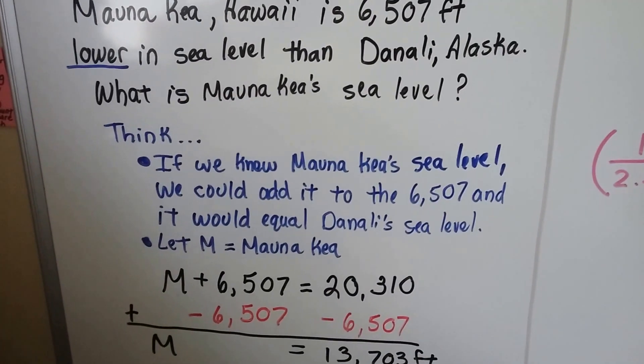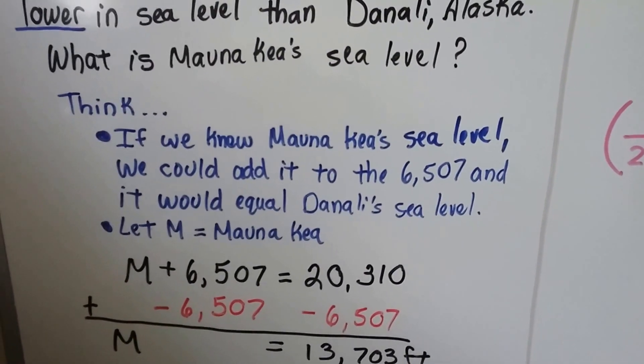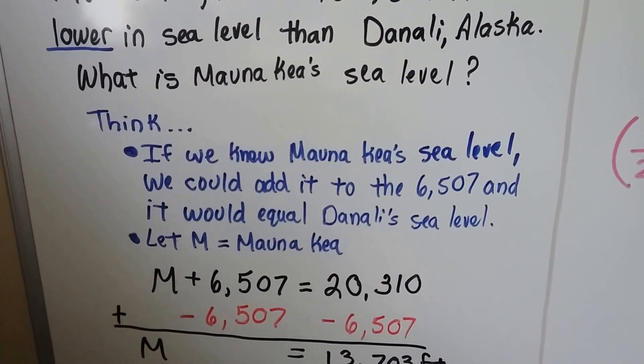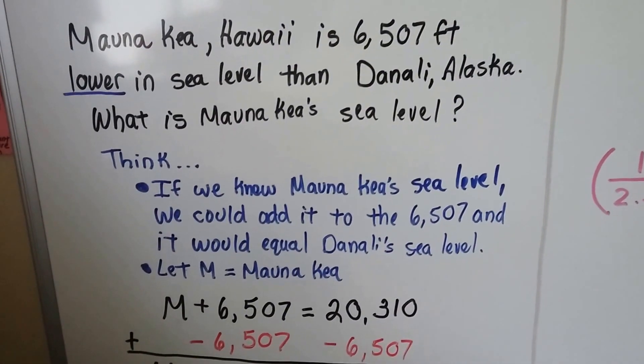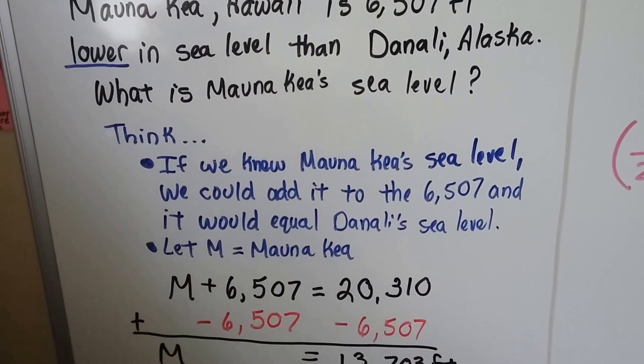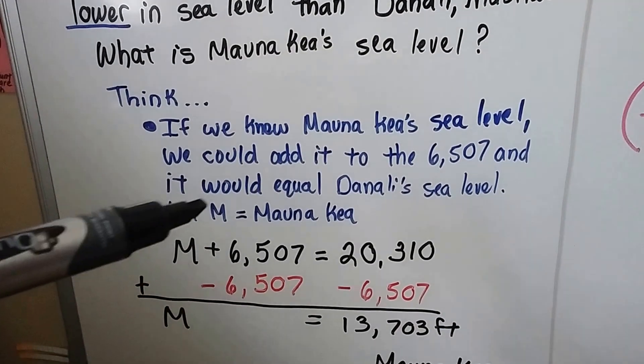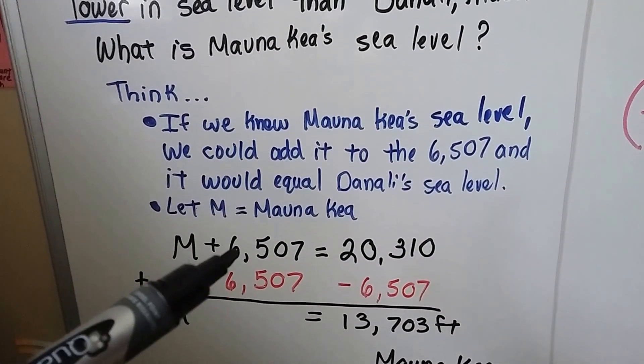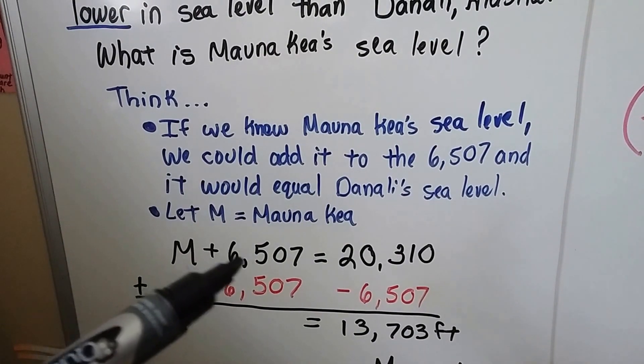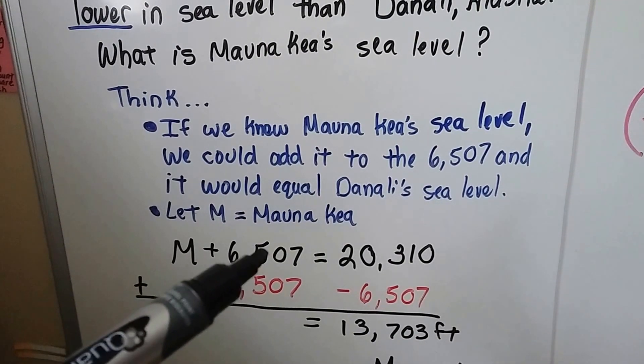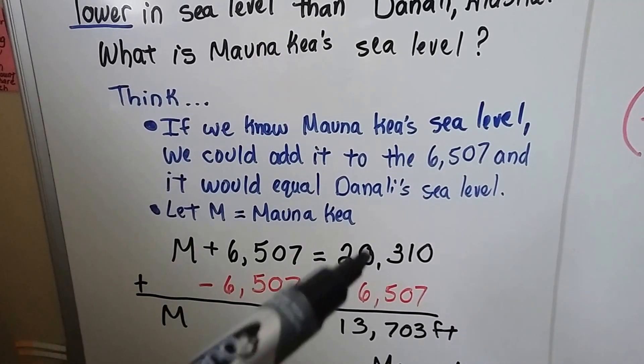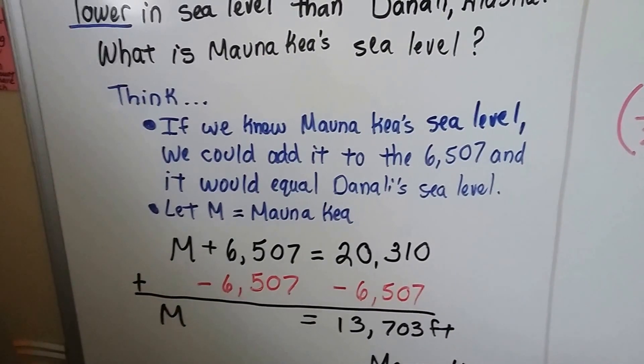So think, if we know Mauna Kea's sea level, we could add it to that 6,507 that it's lower and it would equal Denali sea level. So if we let M equal Mauna Kea's sea level, and we add that lower amount, Mauna Kea and that amount, that difference between the two, will equal Denali, Alaska's sea level.